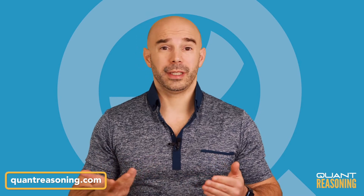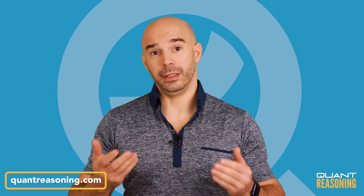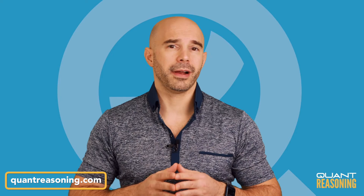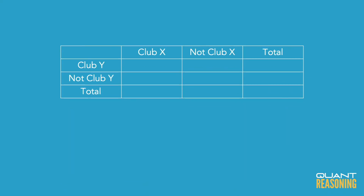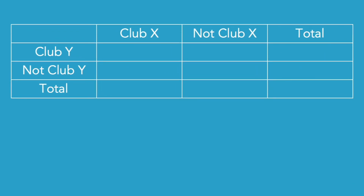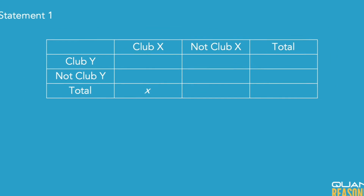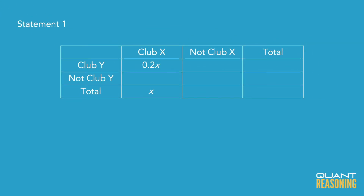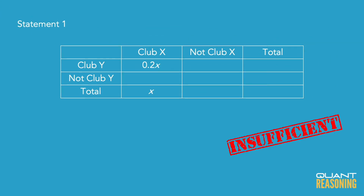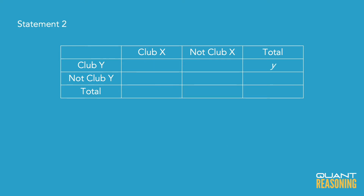Intuitively, I don't see any way how either of these statements would be sufficient on its own. And indeed, if I draw a Carroll's diagram — also known as a double-set matrix — it's clear that neither of these statements is sufficient on its own. You'd have X, not-X, and total; and Y, not-Y, and total. Throwing in each of the ratios from each statement, on their own, there's just no way to get to an answer.